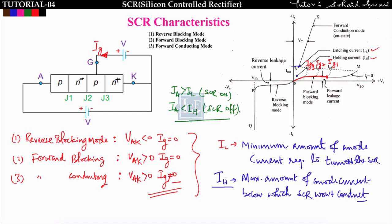To turn off the SCR, the anode current must be reduced below the holding current IH. Since IL is always greater than IH, a separate commutation circuit must be attached to bring the anode current below IH. We cannot turn off the SCR simply by removing the gate current — a separate commutation circuit is required.